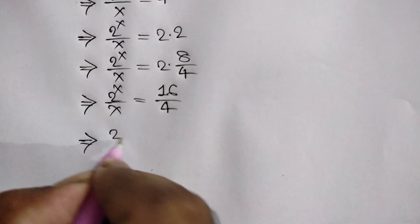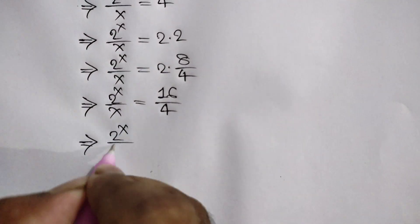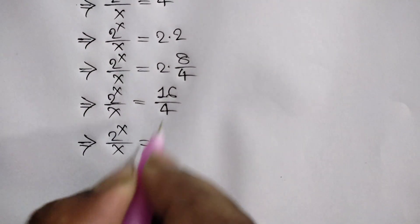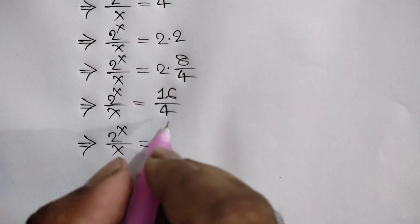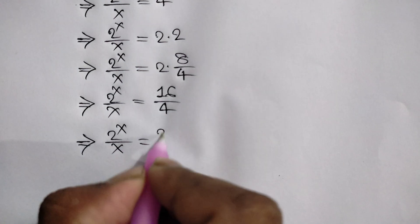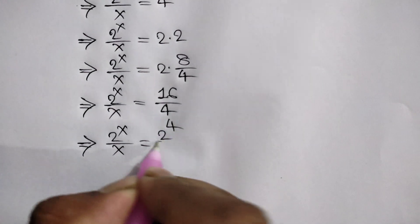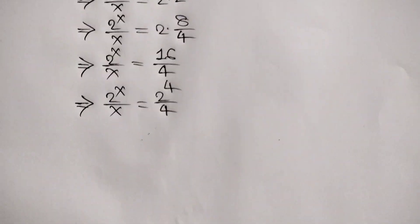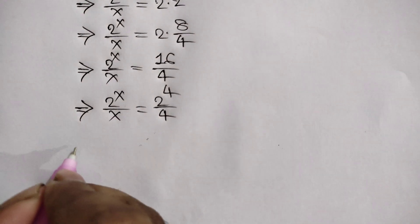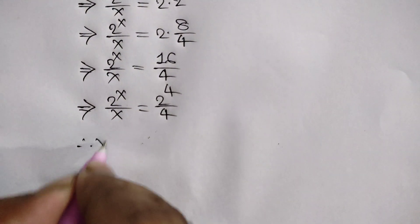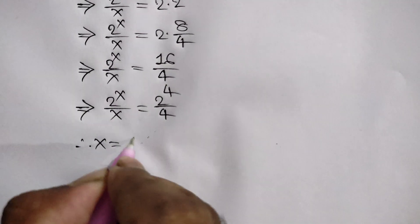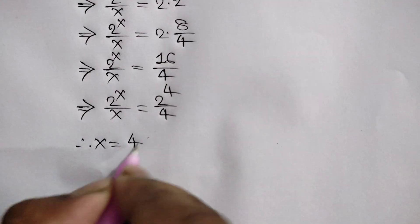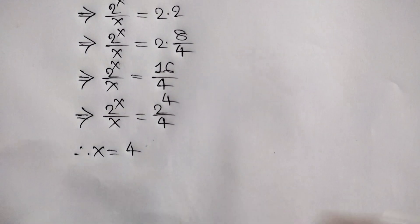2 to the power x over x is equal to 16 over 4, and 16 can be written as 2 to the power 4. So we have 2 to the power x over x equals 2 to the power 4 over 4. Comparing, we get x is equal to 4. So our answer is 4.